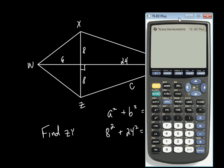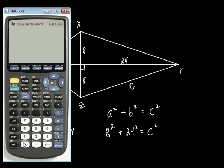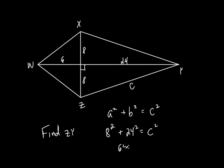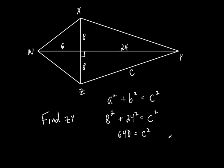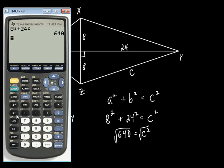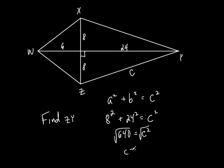So it's 8 squared plus 24 squared equals C squared. That's 64 plus 576 — wait, 24 squared equals 576, so the total is 640. So 640 equals C squared. To solve for C, find the square root. The square root of 640 is about 25.3. So C is approximately 25.3.